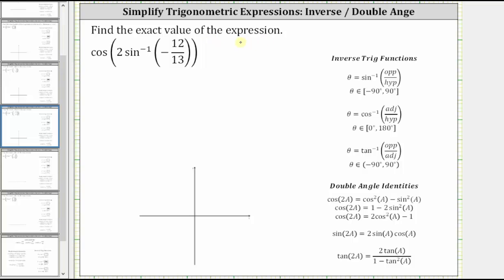We're asked to find the exact value of the expression cosine of two times inverse sine of negative 12 thirteenths. The first thing to recognize here is that inverse sine of negative 12 thirteenths is equal to an angle theta, where the input into the inverse sine function